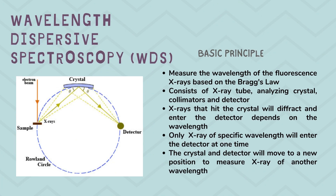WDS measures the wavelength of the fluorescence X-rays based on Bragg's law. It consists of an X-ray tube, analyzing crystal, collimators, and detector. The X-rays that hit the crystal will diffract and enter the detector depending on the wavelength.